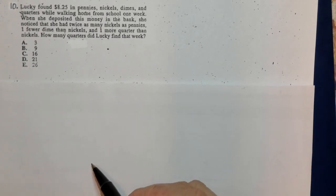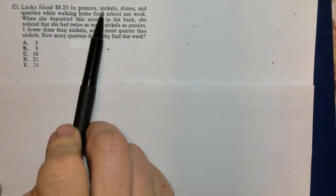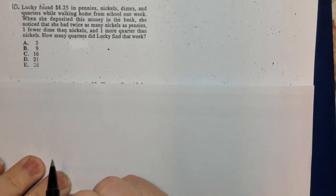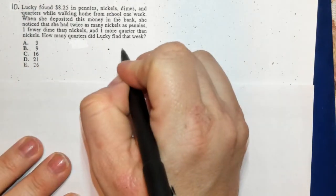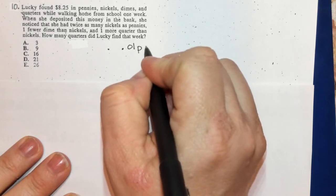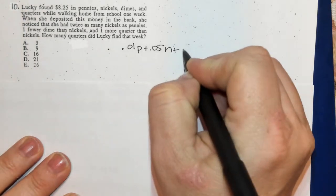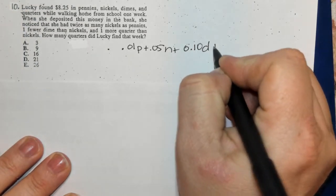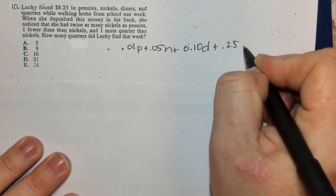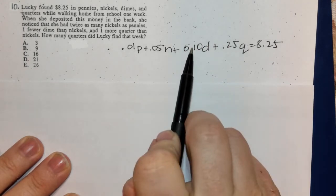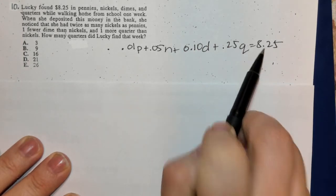I'm going to set this up into a matrix, letting P, N, D, and Q represent pennies, nickels, dimes, and quarters, respectively. Making the first equation: 0.01P + 0.05N + 0.10D + 0.25Q = 8.25. This represents the value of each coin and the total amount.